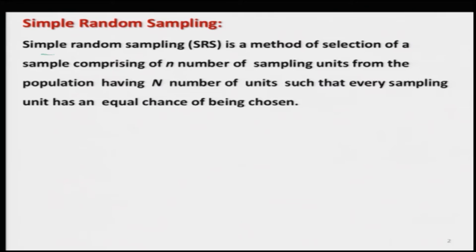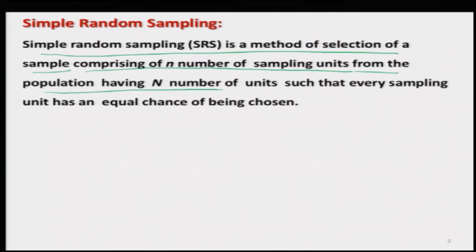Keeping in mind all such characteristics of a sampling scheme, we will start first with the most simple sampling technique — simple random sampling. Simple random sampling is a method of selection of a sample comprising of small n number of sampling units from a population of capital N number of units, and this collection is made in such a way that every sampling unit has an equal chance of being chosen.